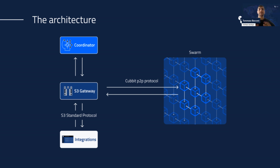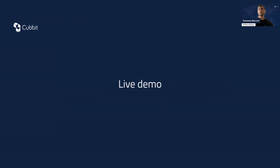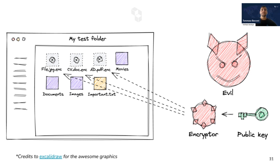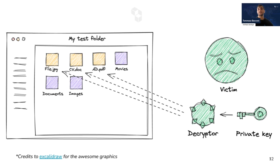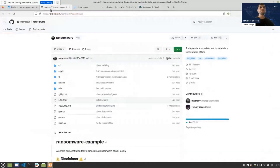Now let's go into the demo. The context: assume we have an attacker who wants to encrypt all your files to ask for a ransom. The attacker creates two keys — a public key used to encrypt the files, and a private key needed to decrypt them. The victim would theoretically pay the ransom to obtain that private key. Today we'll show how the victim can recover the files without having that private key — without paying the ransom.